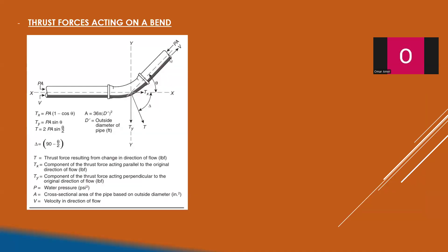As shown here, the thrust force generated at the elbow point increases with the bend angle. Also, if the pressure of the flowing fluid inside the pipe is high, it will increase the thrust force. The velocity of the flow and the bend angle, as mentioned, also increase the thrust force.